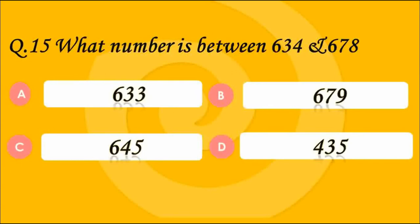Question number 15. What number is between 634 and 678? Options are 633, 679, 645 and 435. Answer C — 645. The between number is 645 because 633 is before 634, 679 is after 678, and 435 is before 634. So the between number is 645.